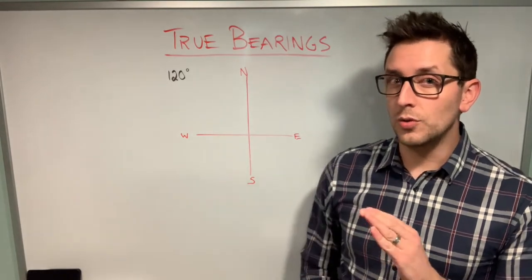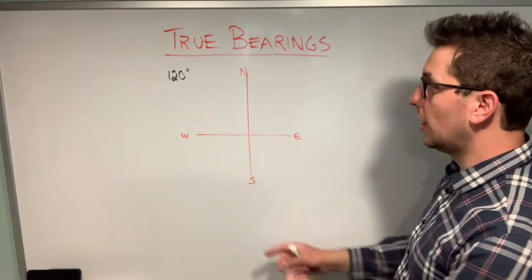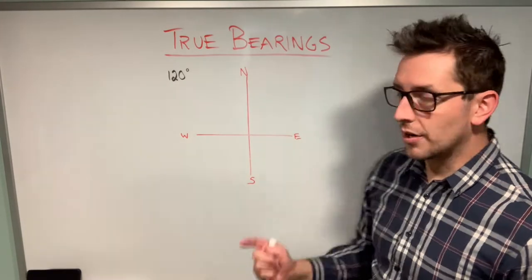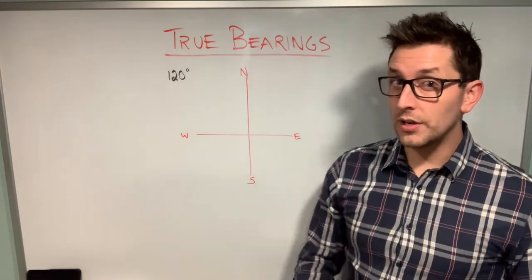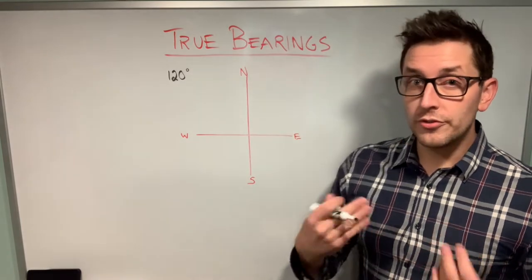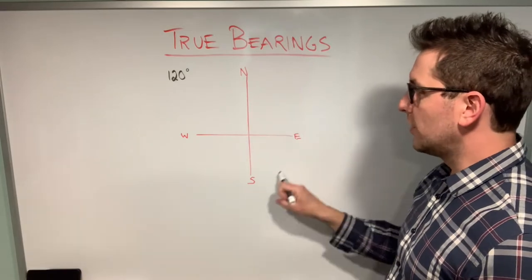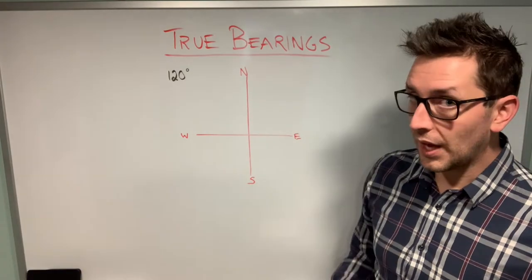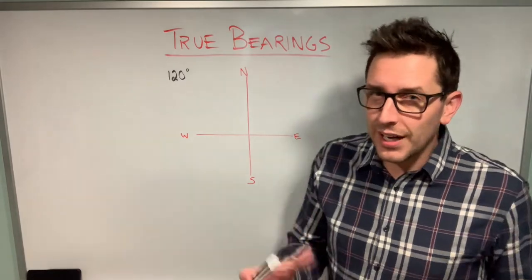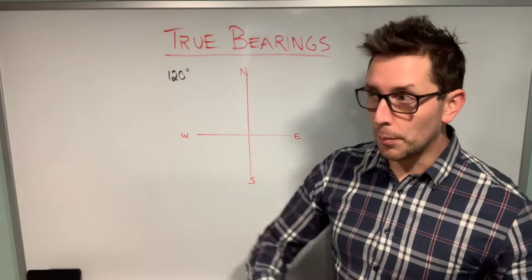Looking at the grid I've drawn, I have my north axis, and I want to draw a vector at an angle of 120 degrees with respect to that northern axis. To do that, I'm going to rotate clockwise around the axis by 120 degrees. I'm not going to use a protractor — I want to show you how to approximately know where that angle lies without any fancy measuring tools.